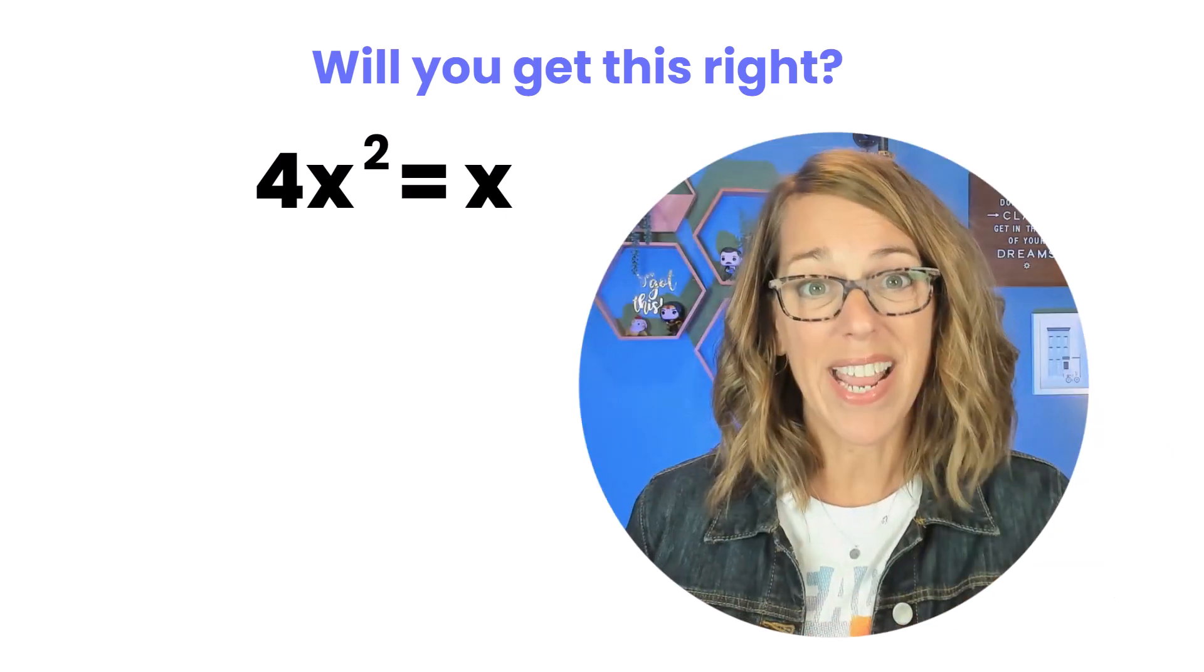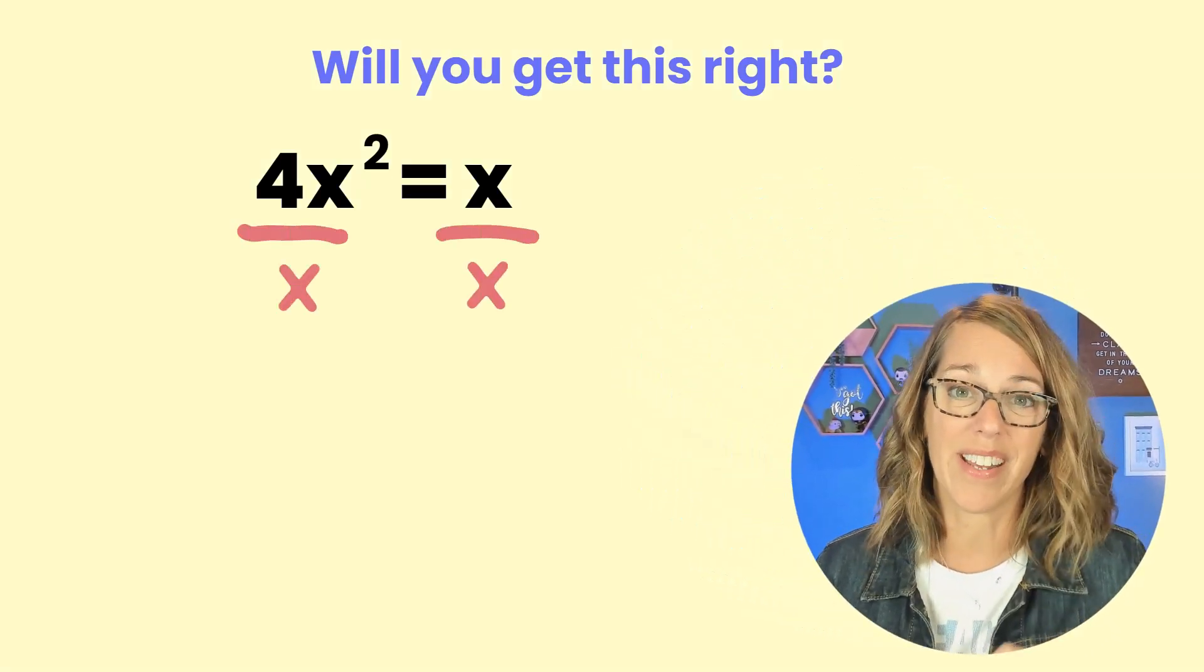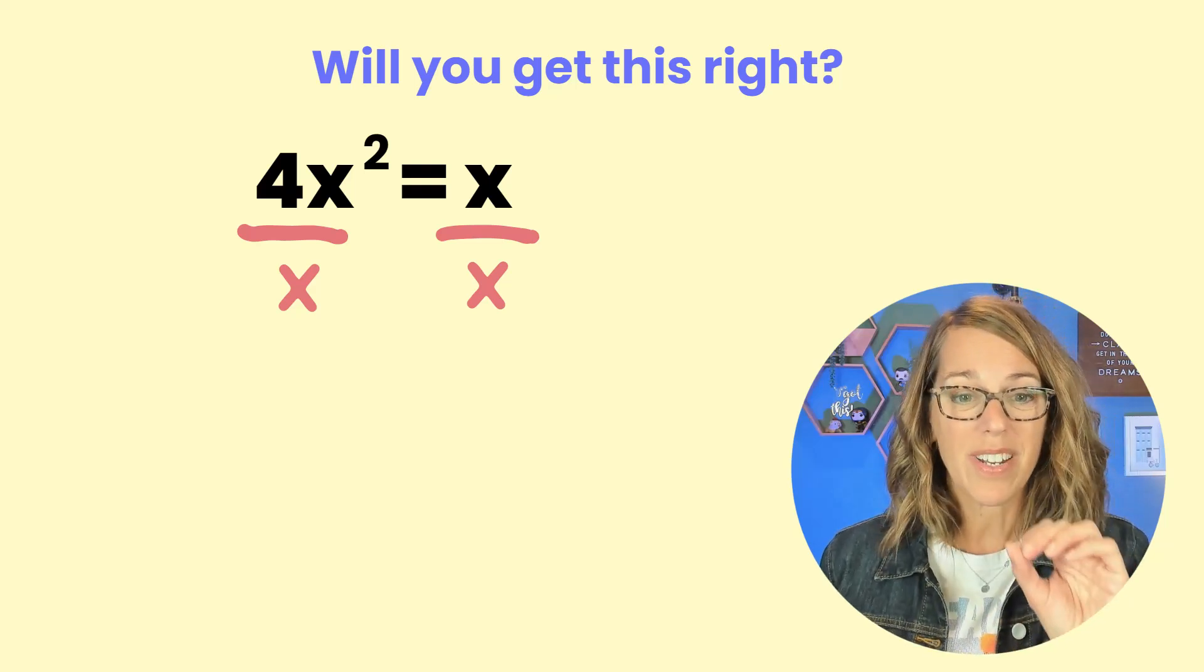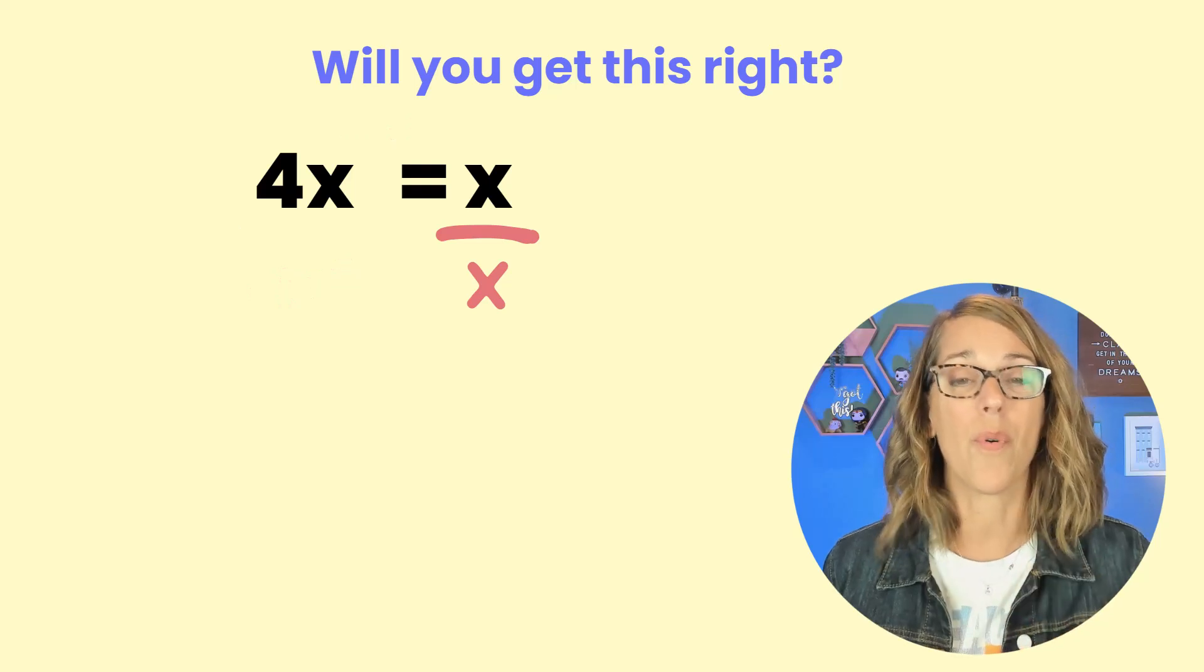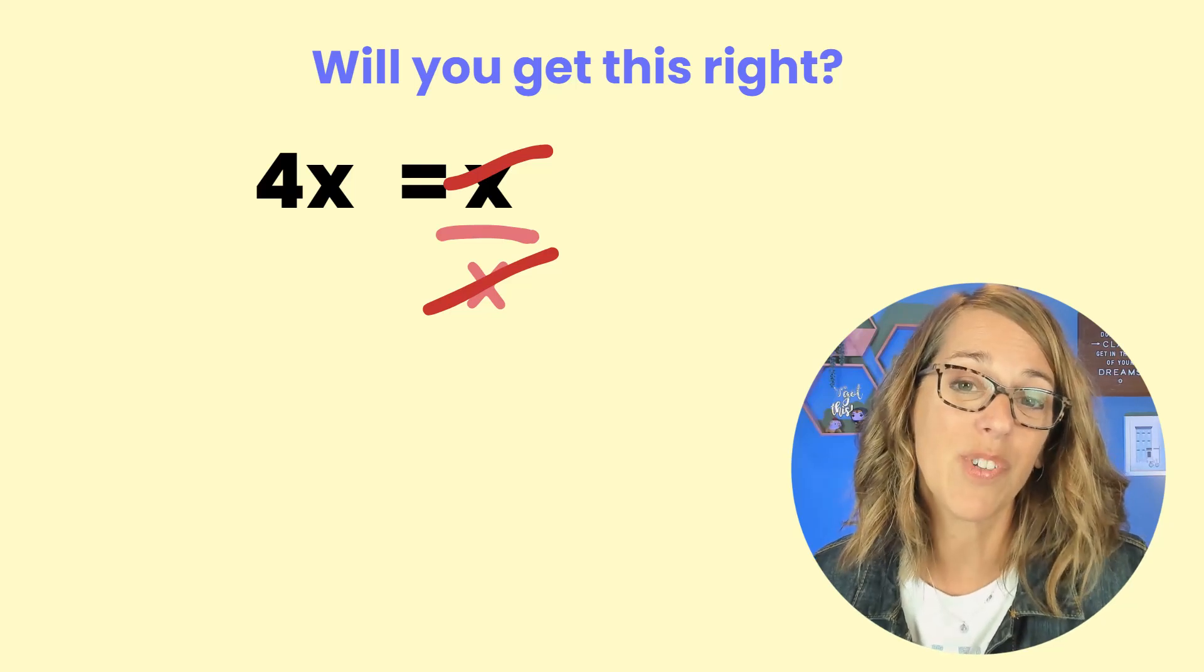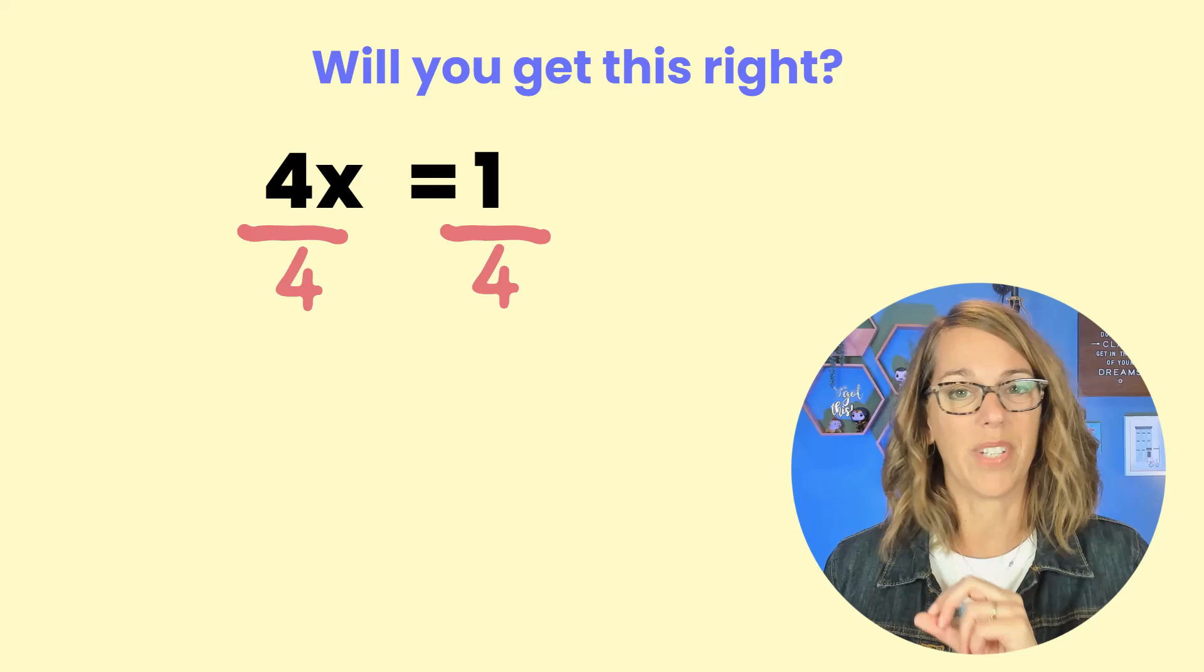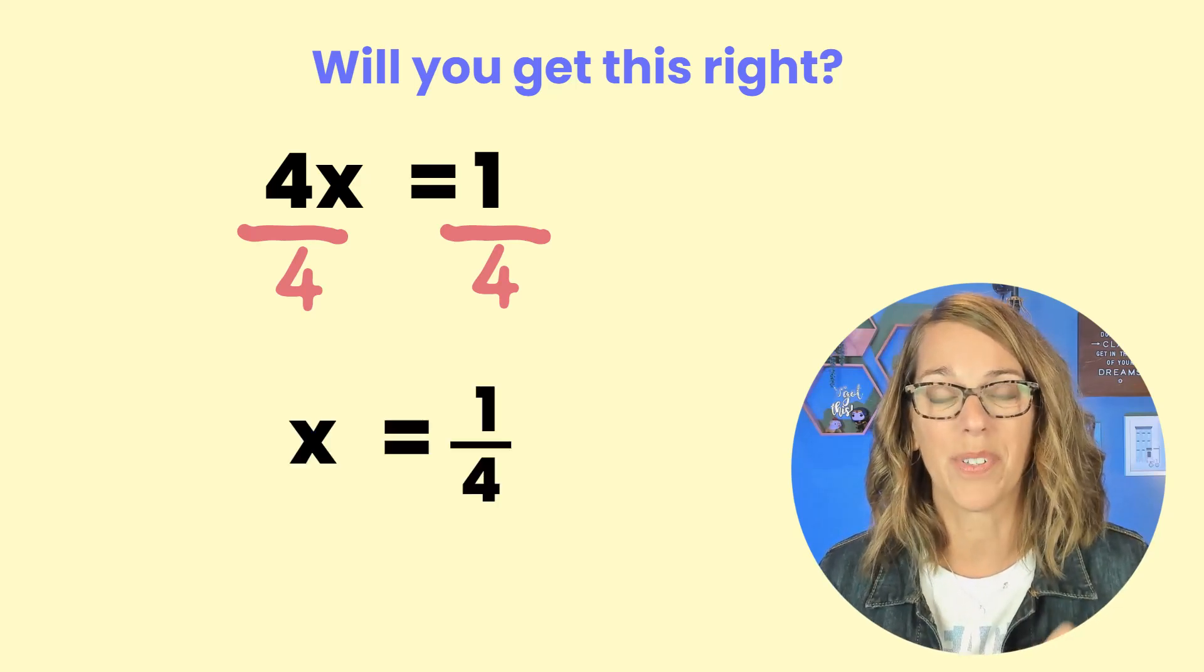Now the next step that you might be tempted to take is dividing both sides by x. Let's say that you did this. That would mean that you could cancel an x from the left hand side leaving us with a 4x on the left. On that right hand side we've got x divided by x which would be 1. To finish this off you would divide both sides by 4 and we end up with x equals 1/4.